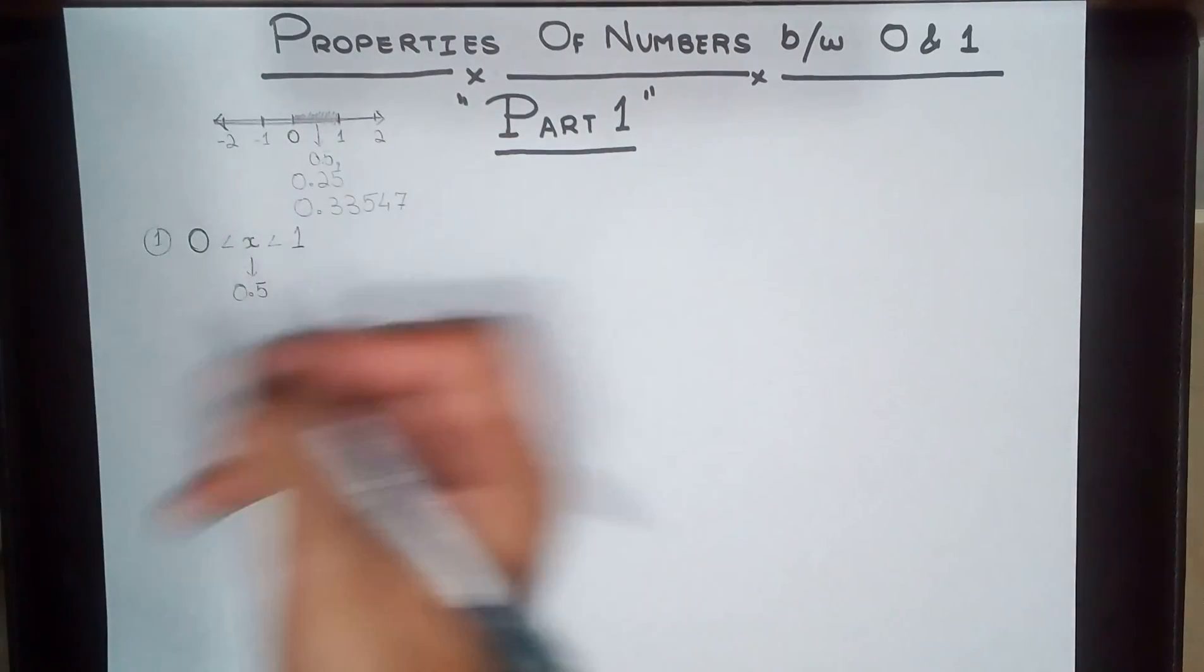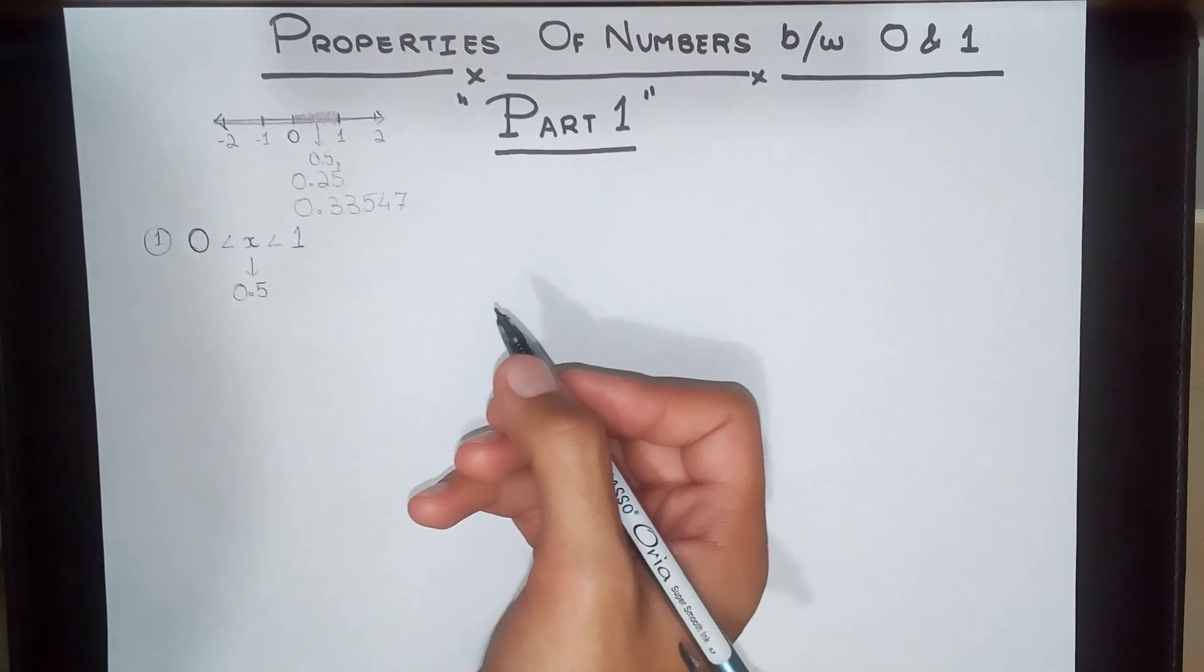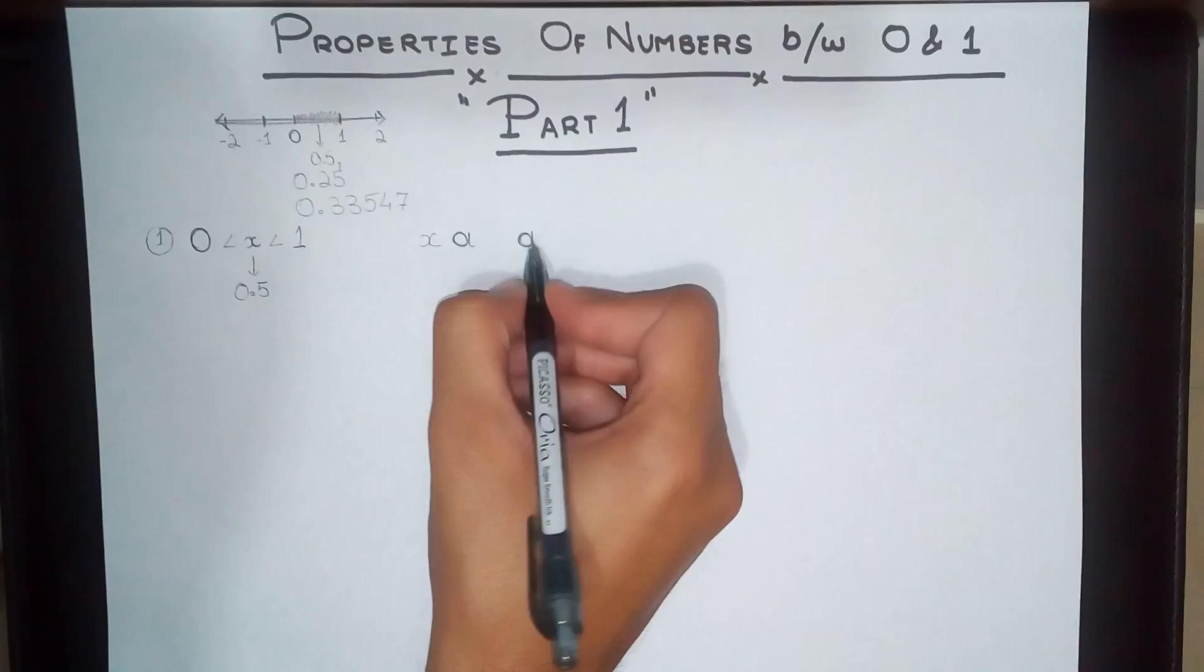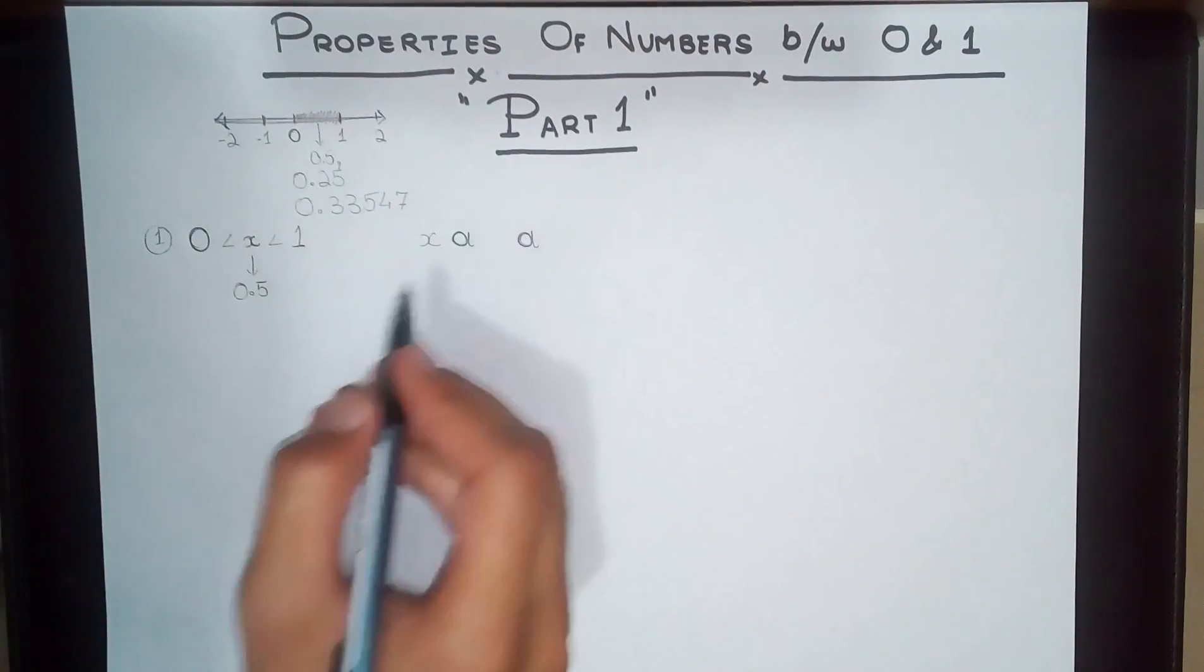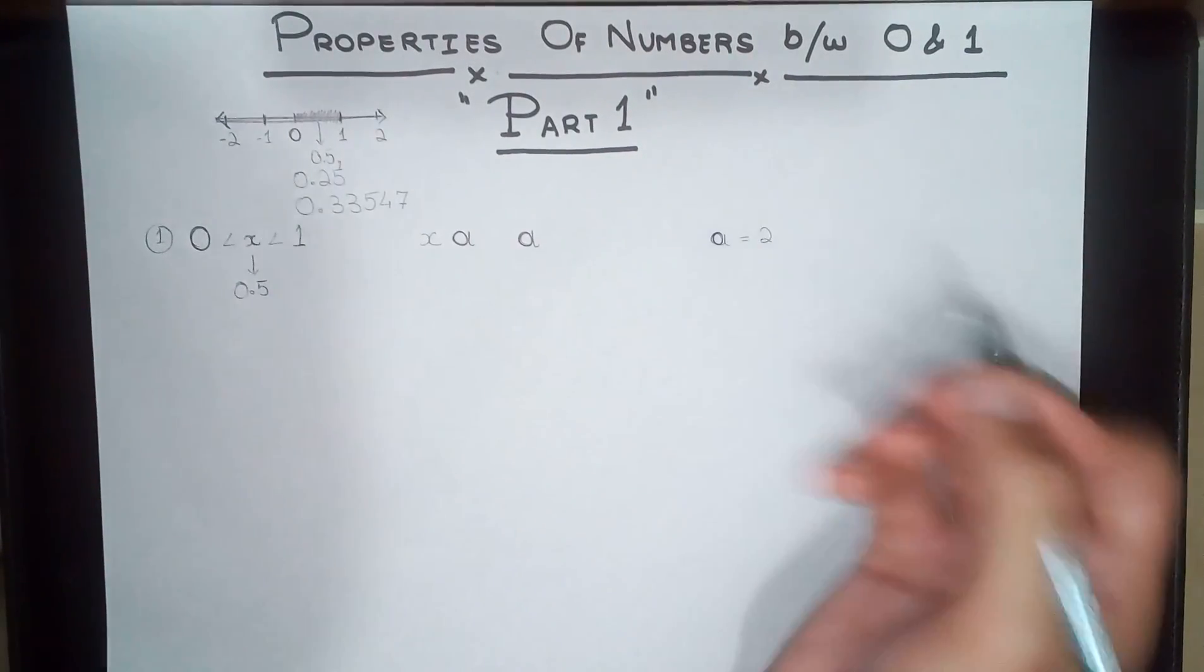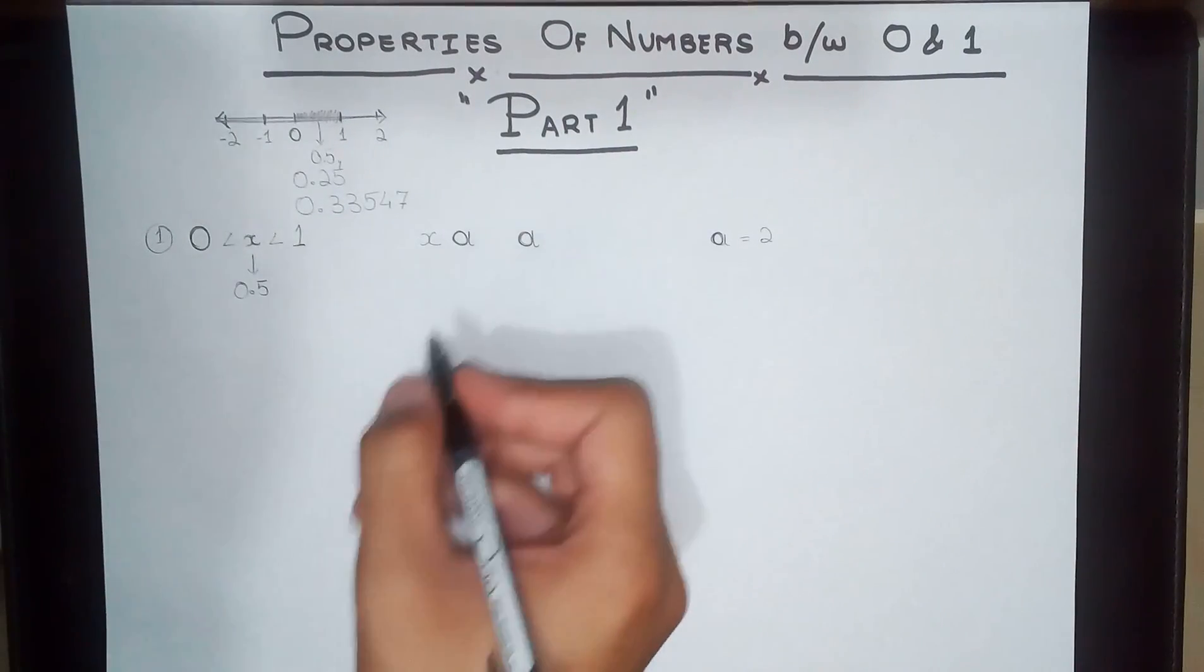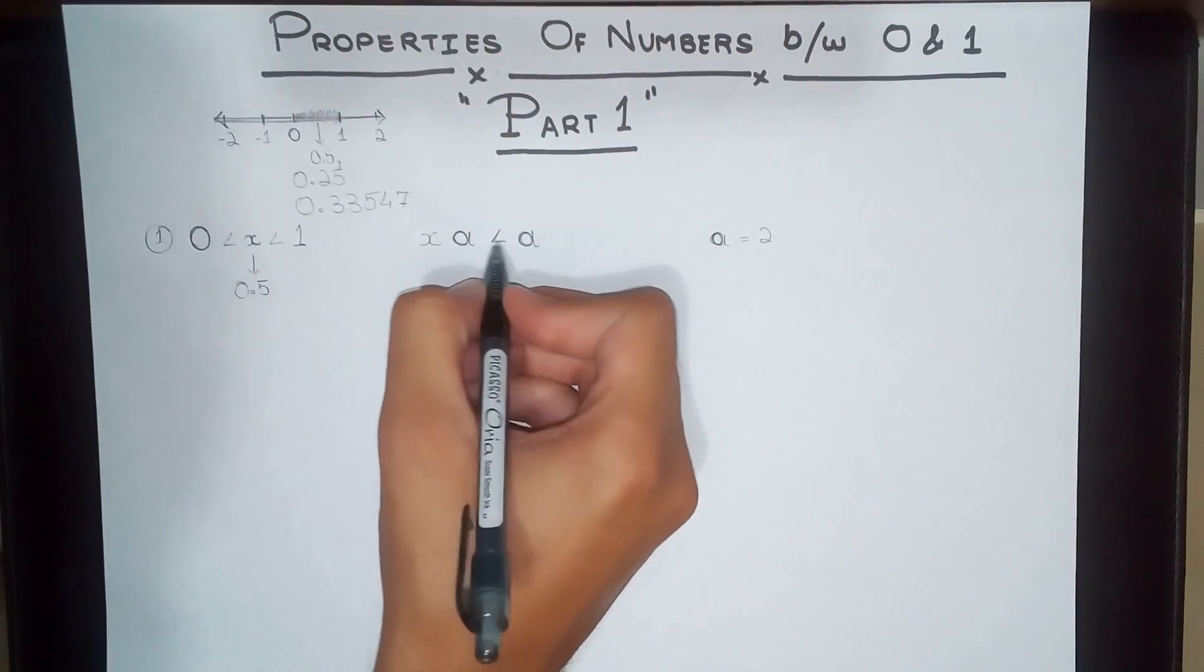...be using the number 0.5. So first of all, let's say that we have this side and we have this side. a is any positive number, and a will be equal to 2 when we're going to be discussing in the more precise way to see if it is true or not.